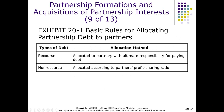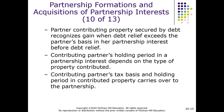Recourse debt is allocated to partners with ultimate responsibility. Non-recourse debt is allocated according to the profit-loss ratio. With recourse debt, we give all that debt basis to the individual who bears it, and any non-recourse debt is allocated on the profit-sharing ratio.